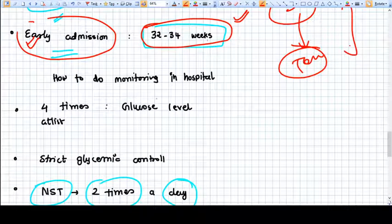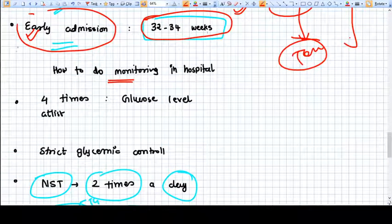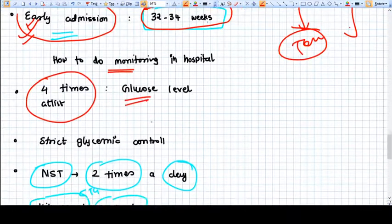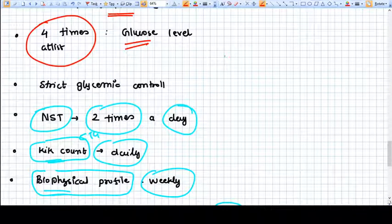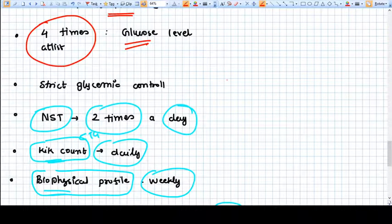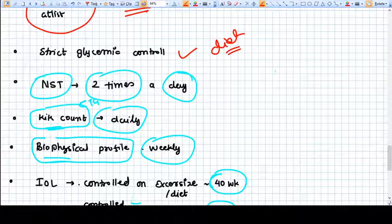With admission, we can carefully monitor and act regarding treatment. With early admission, we can do at least four-time glucose level monitoring ourselves, and patient compliance is very high during admission. We provide strict glycemic control and a diet chart with dietitian consultation.